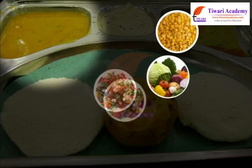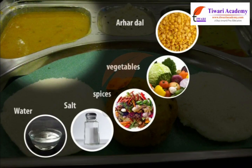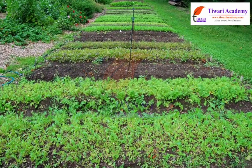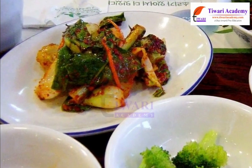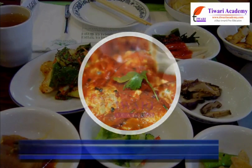Similarly, sambar is made up of arhar dal, vegetables, spices, salt and water. Here also, we get arhar dal, spices and vegetables from plants.